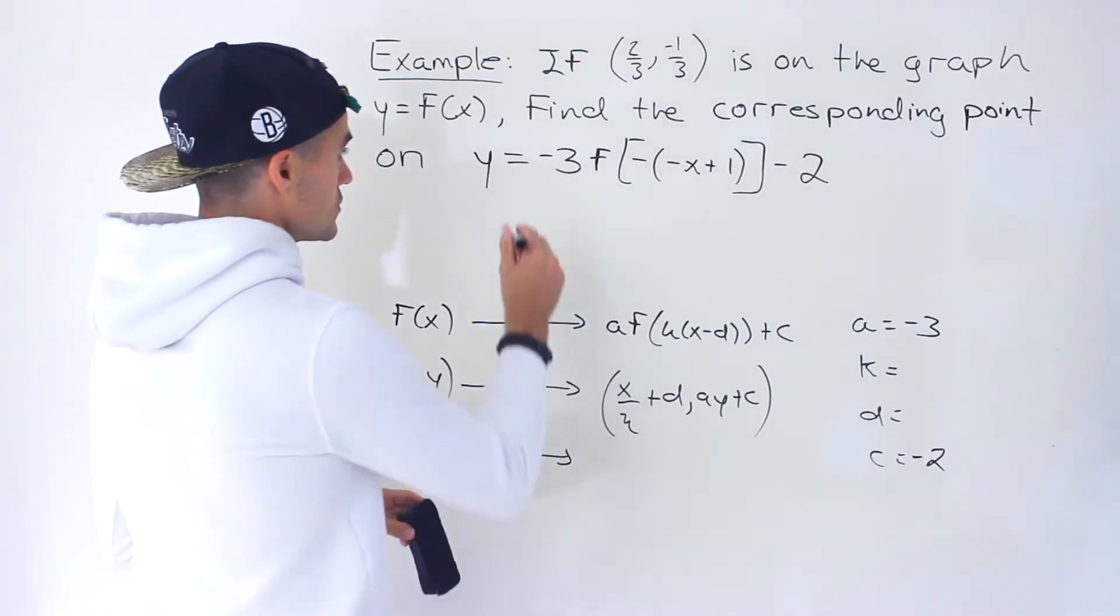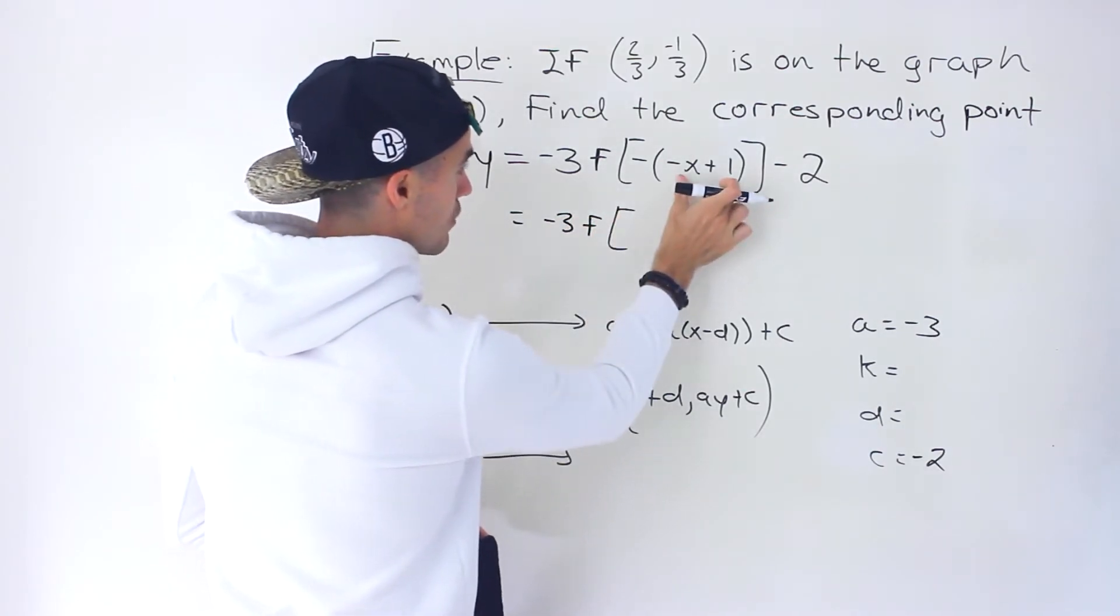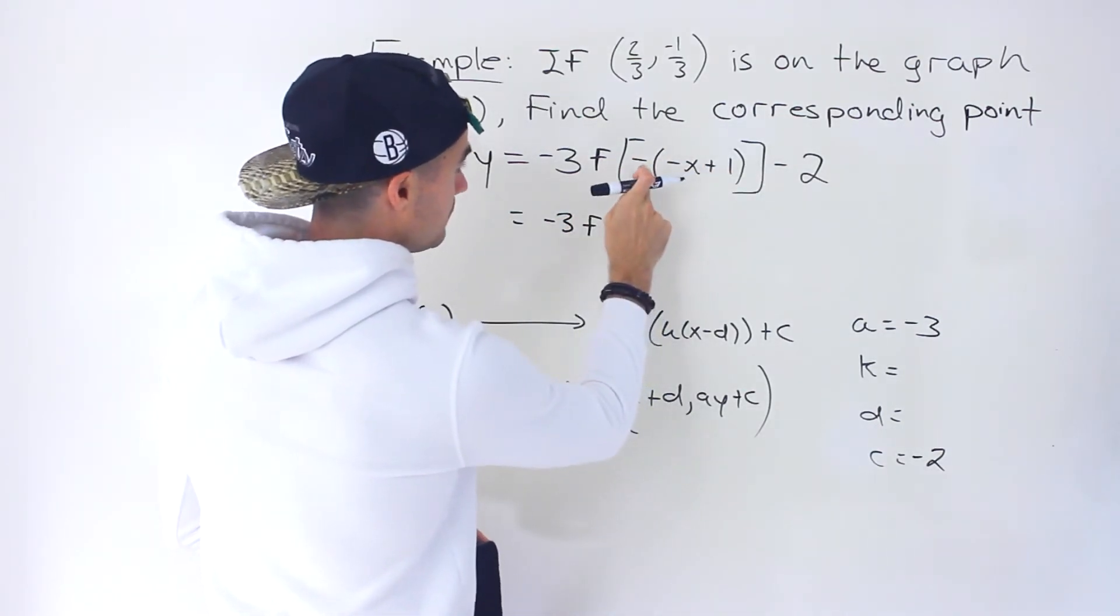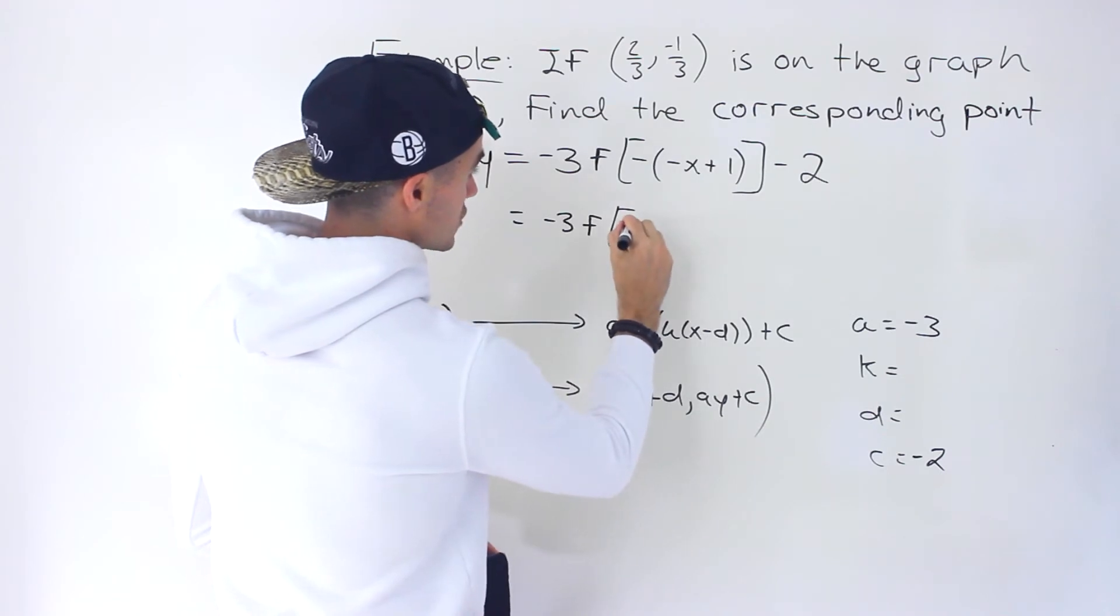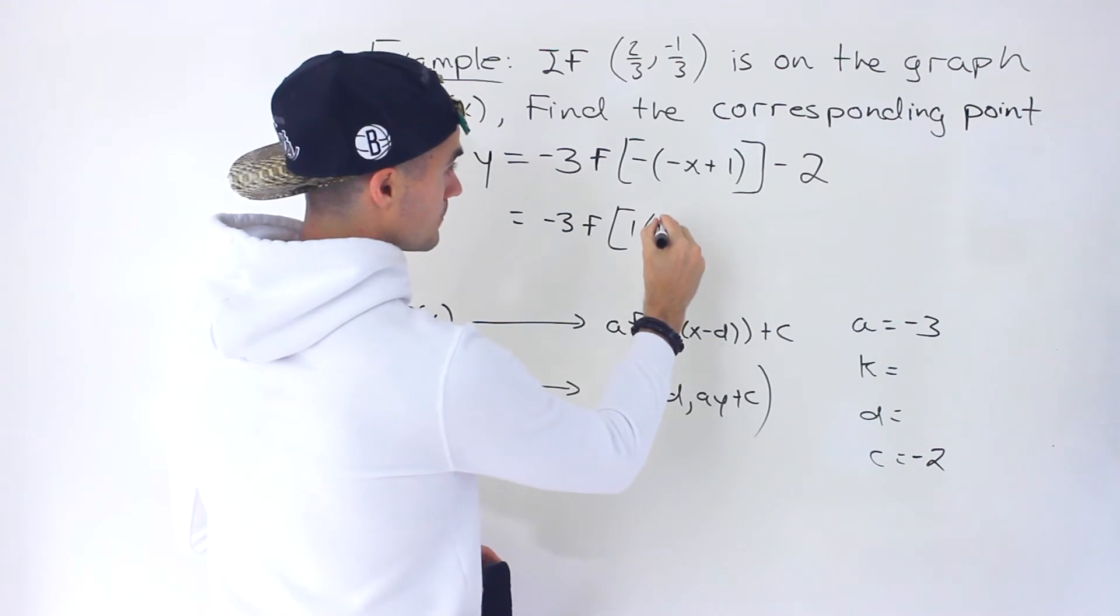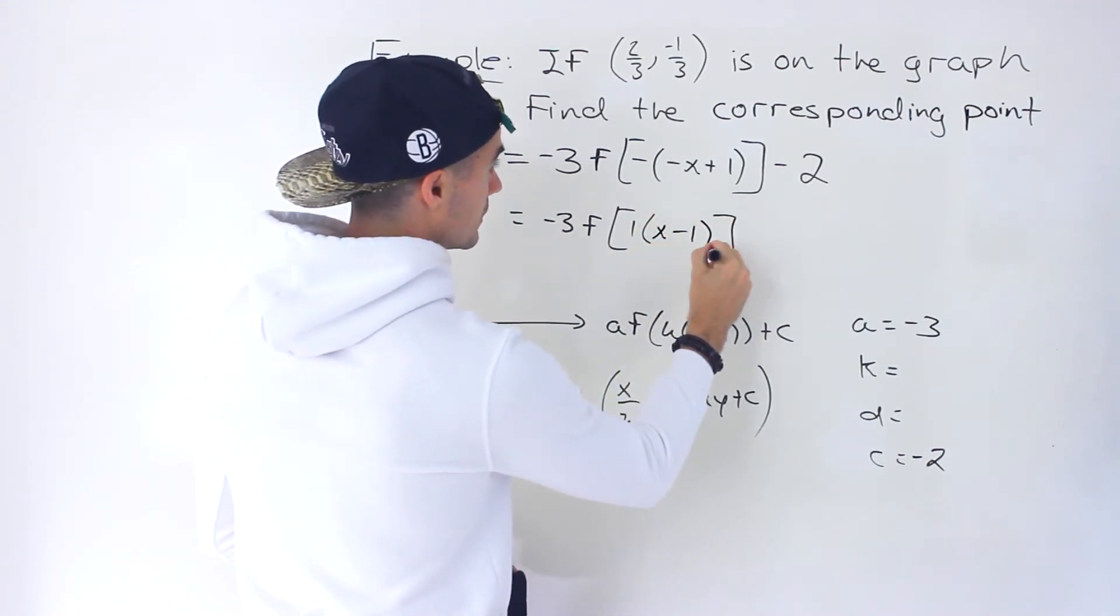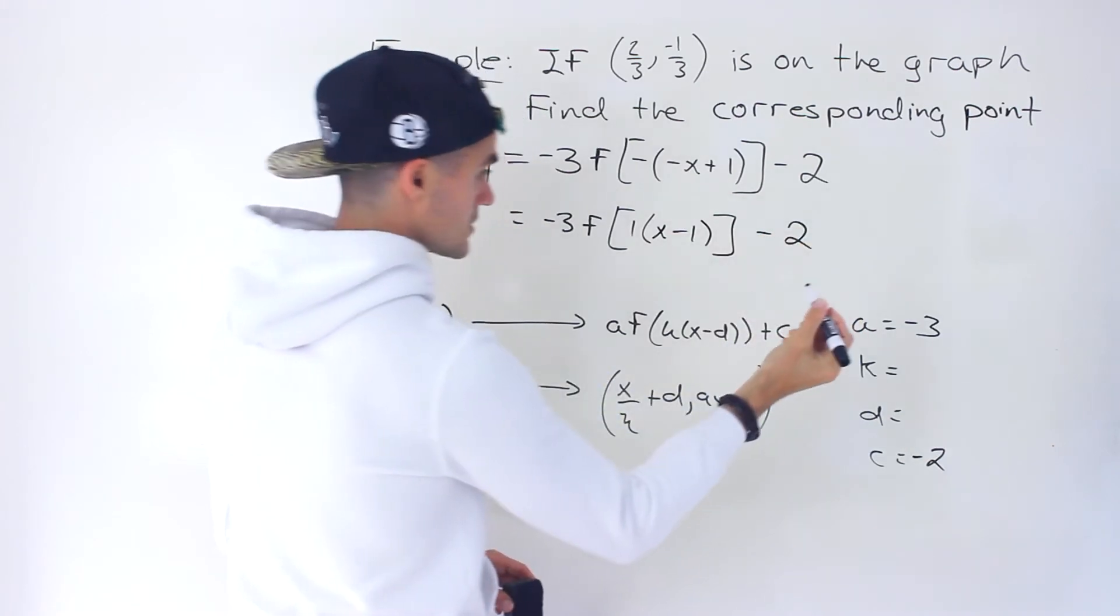So what we want to do actually is rewrite this. We want to take out that negative 1 from this bracket. Then negative 1 times negative 1 would actually give us a positive 1. And then all of the signs here in this bracket would change, right? Because we took out a negative 1. So it would be x minus 1, like that. And then we'd have a minus 2.